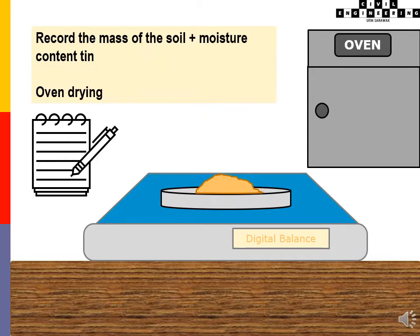Record the mass of the soil with the moisture content tin and transfer into the oven for drying.